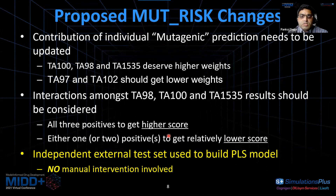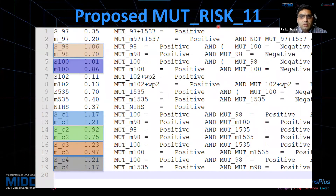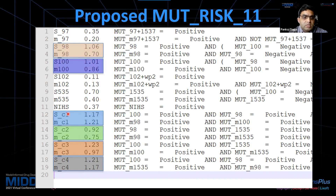When we started working on it, we decided to use an external test set to build a PLS model, with no manual intervention involved. The entire model was built using our ADMET Modeler — all we had to do was provide the weights and prepare a manual file for MuteRisk. In the proposed MuteRisk 11, the newer model, we can see that weights are allotted by the model, with TA98 and M98 getting higher scores compared to TA97 and TA102 models. These combinations are also allotted higher weights than individual contributions.